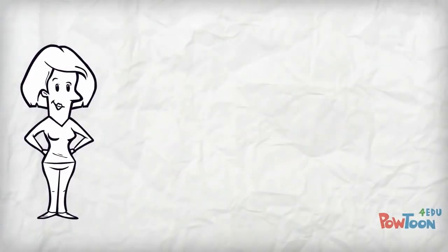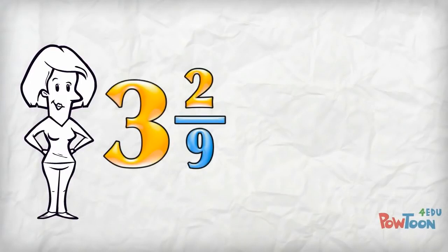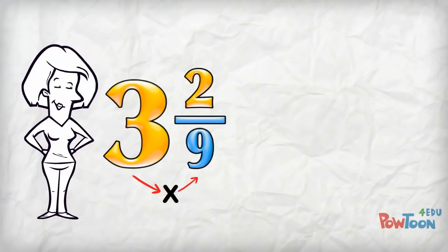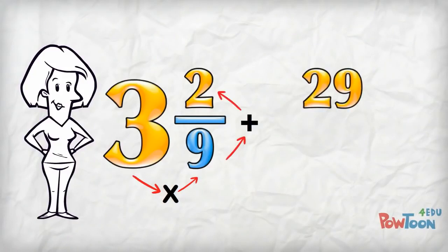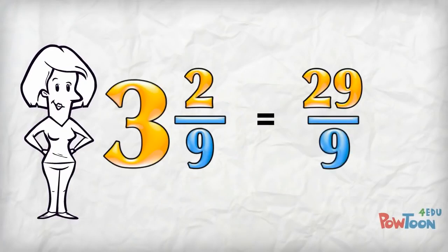So when you're changing a mixed number to an improper fraction, you take the whole number and you multiply it by the denominator, and then you add the numerator. That's your total number of parts—it's your new numerator. Put it over the old denominator and you're all done!